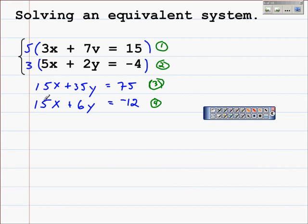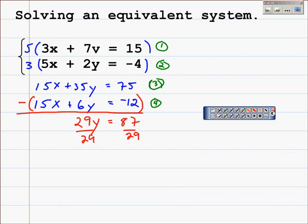So I'm going to subtract these two equations. Doing that, I can eliminate the x terms. 35y minus 6y is 29y, and 75 take away negative 12 is 87. Dividing both sides of that by 29 gives us y equals 3.